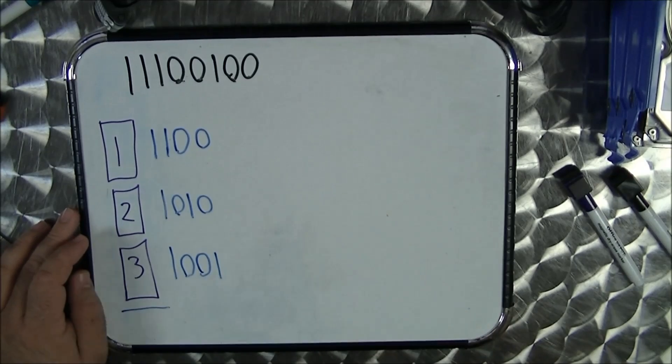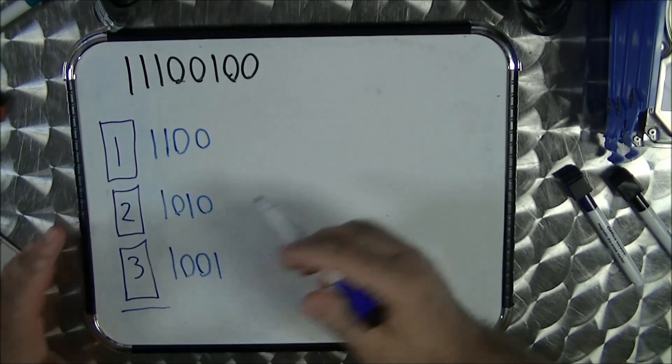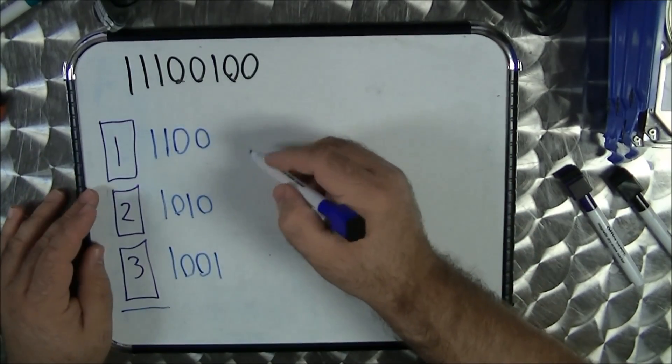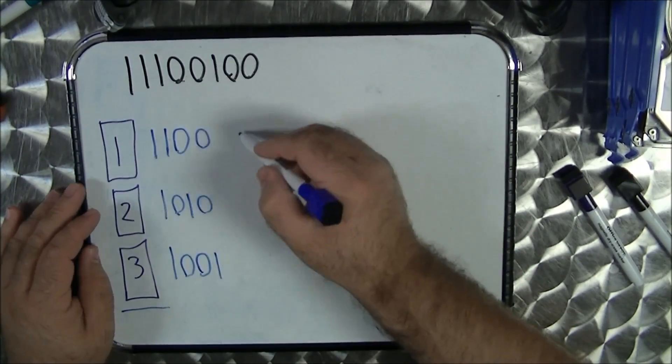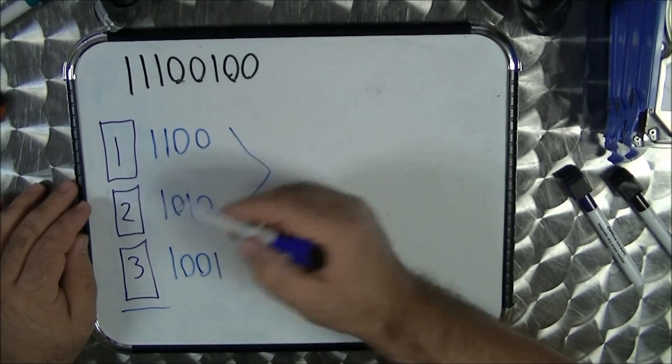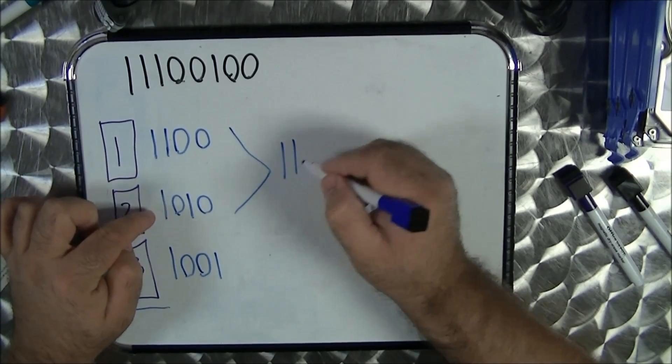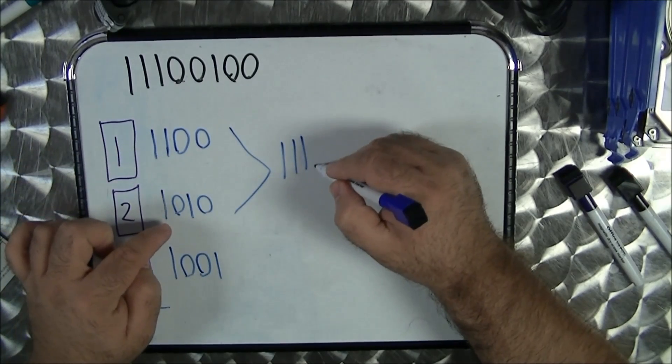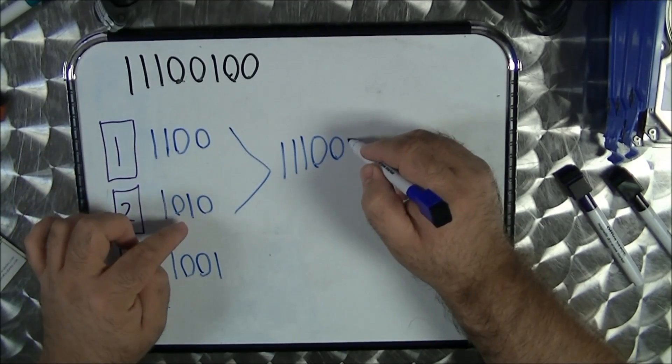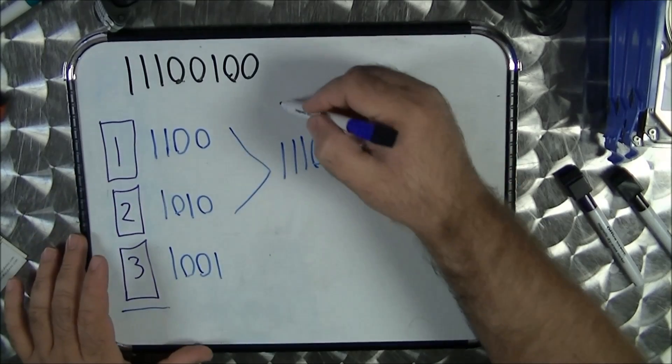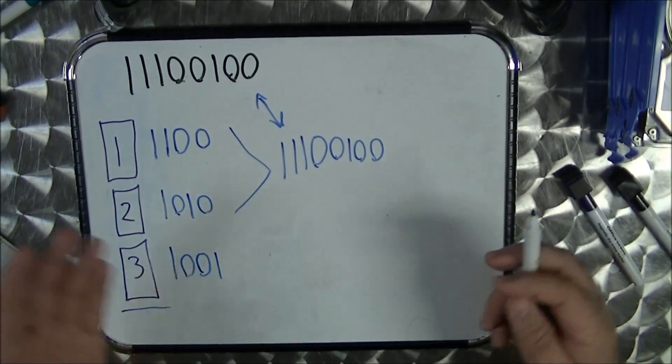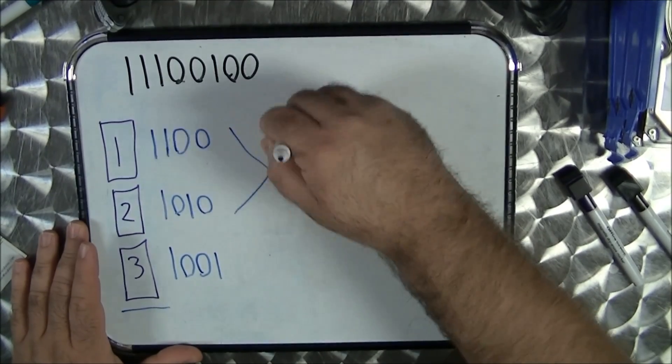Now when you retrieve the data, it rebuilds it. Let's go retrieve that data. So what do we have? We have our data and there's our parity. It's 1 1 1 0 0 1 0 0. We have a match, not a problem. That was easy.